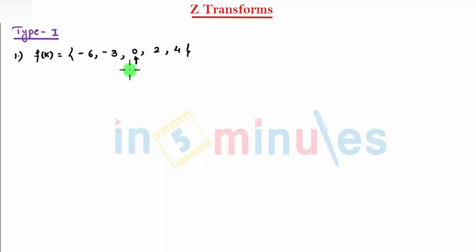Before that, this is defined at k equal to 0, 1, 2, minus 1, minus 2.